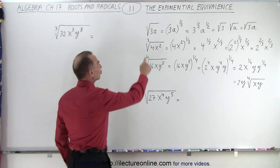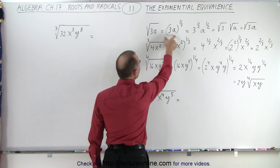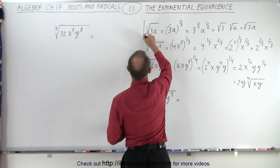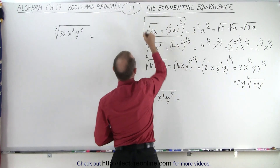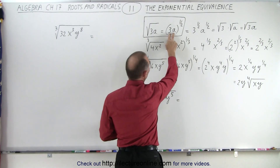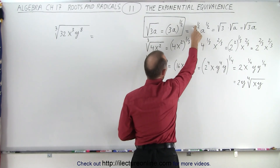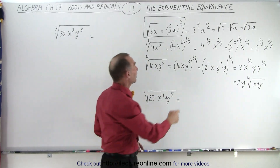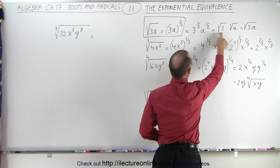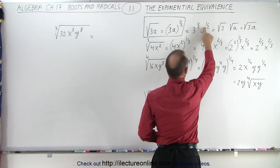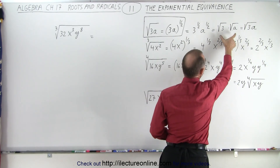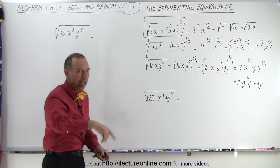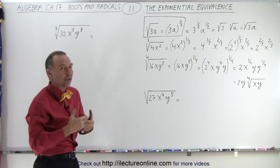For example, when we have the square root of 3a, that can be written as the quantity 3a raised to the one-half power — that is essentially the same thing. We can separate these two: we can write this as 3 to the one-half power times a to the one-half power. The exponential equivalent means that 3 to the one-half power can be written as the square root of 3, and a to the one-half power can be written as the square root of a, and then we multiply them together to get back what we originally started with. So we're back full circle, and that's what we mean by exponential equivalence.